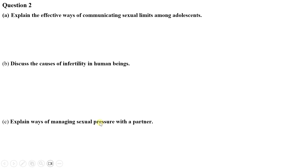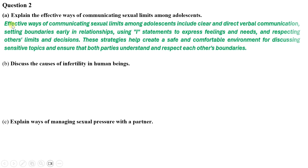Question one (c) — two reasons why there is limited excretion of substances in plants: first, plants have efficient nutrient recycling systems within their structures, allowing them to reuse many substances that animals would excrete. Second, plants generally have a lower metabolic rate compared to animals, resulting in fewer waste products that need to be eliminated.